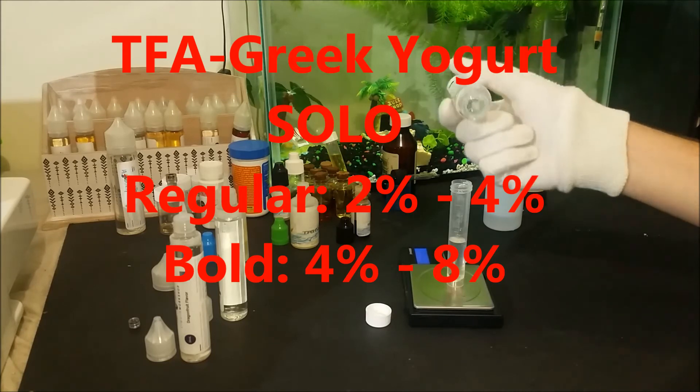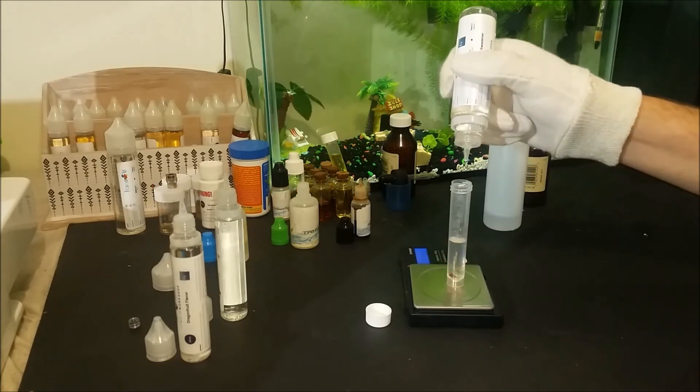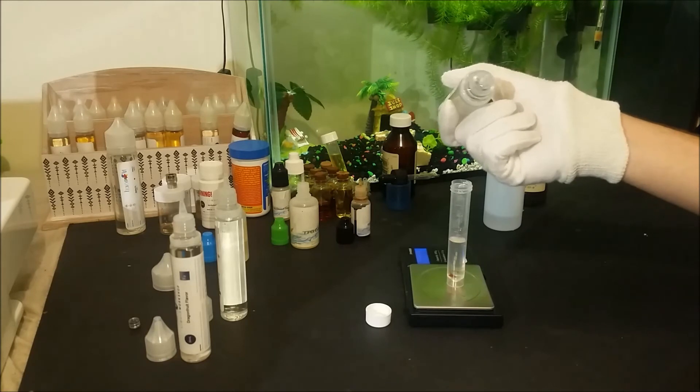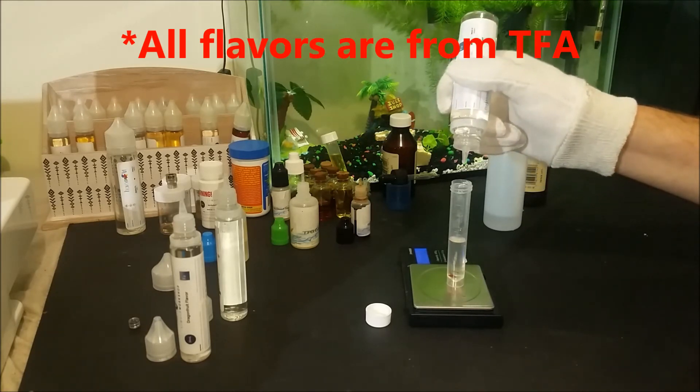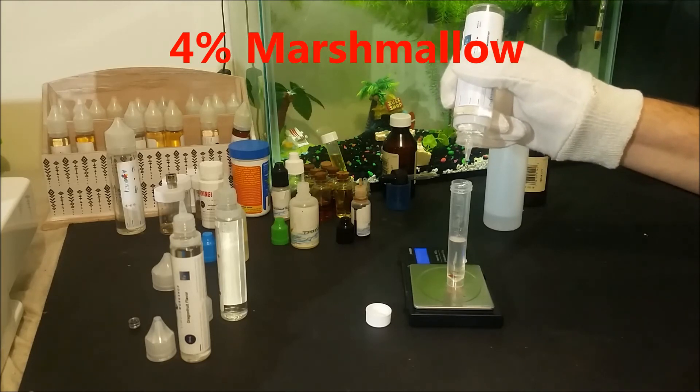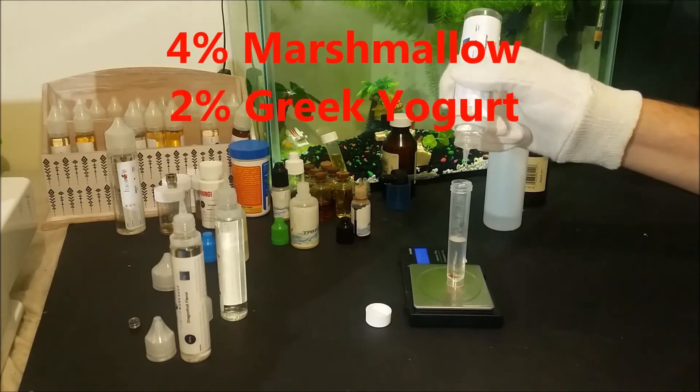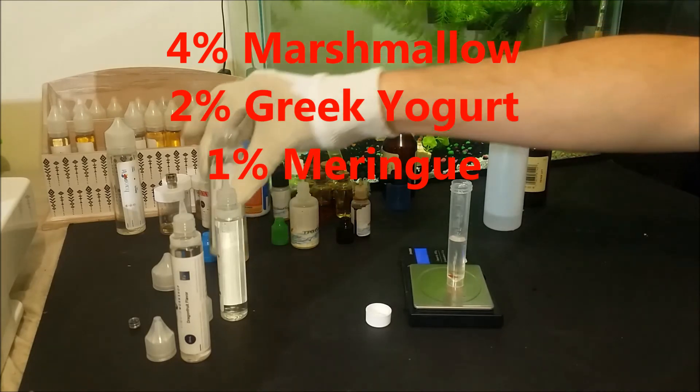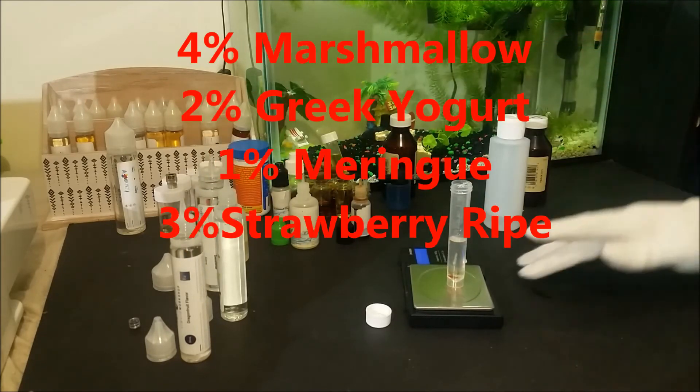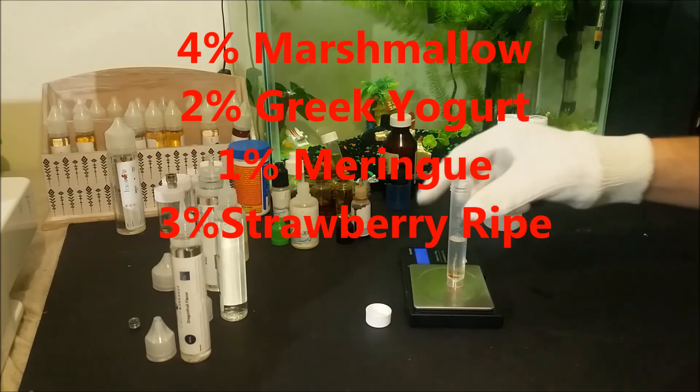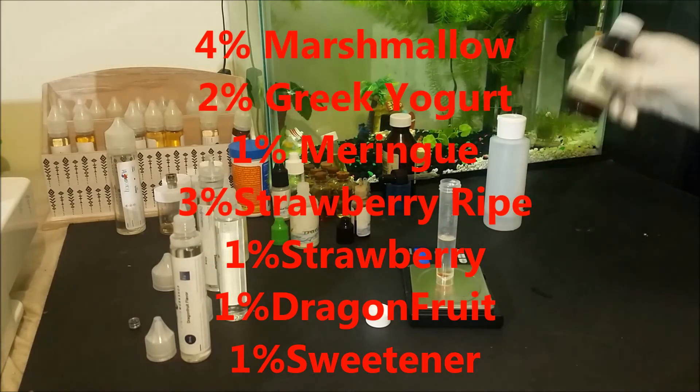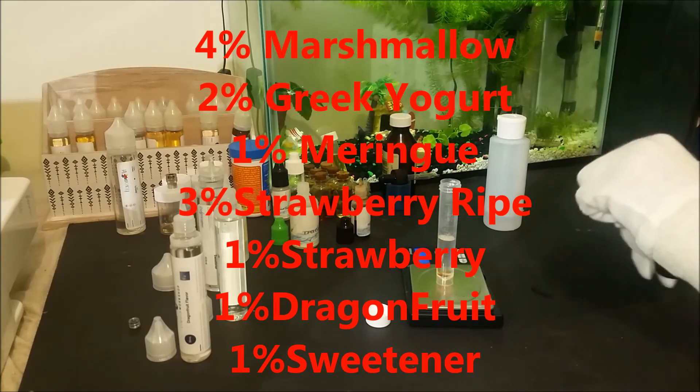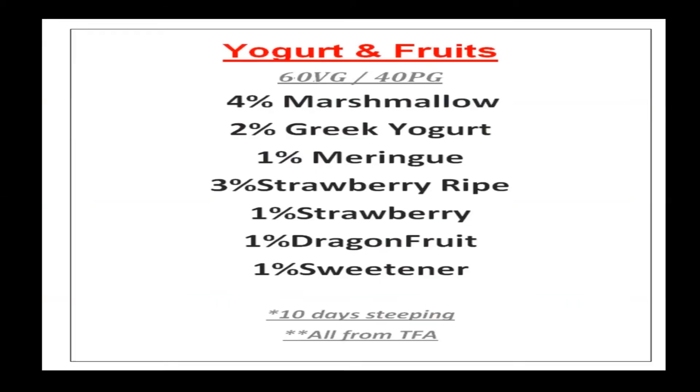If you have this flavor and you would like to make a quick recipe, here is a nice e-liquid you can make. All flavors used below are from TFA. So starting with 4% of marshmallow, 2% of Greek yogurt, and 1% of meringue. And now with the fruits, starting with 3% of strawberry ripe, 1% of strawberry, just the strawberry, and 1% of dragon fruit, together with 1% of sweetener, all mixed at 60% of vegetable glycerin and 40% of propylene glycol.